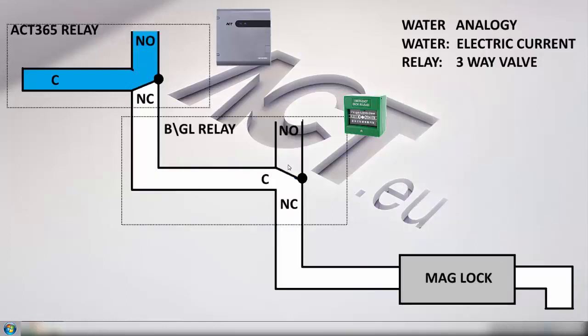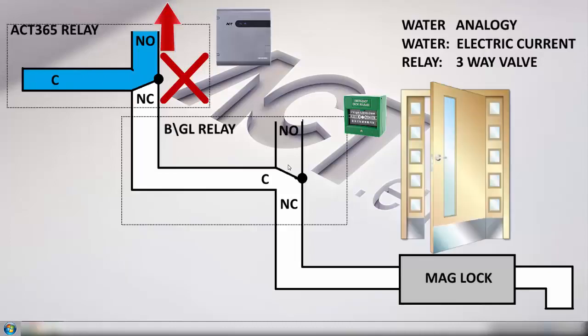But say for example now the state of the AC365 relay changes. You can see now the current comes in and it flows into normally open so that's connected to nothing. This breaks the circuit and water or the current can no longer flow down into the mag lock causing it to de-energize, hence causing the door to open.